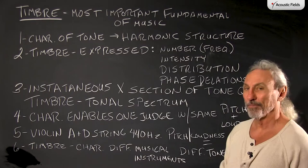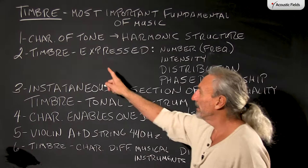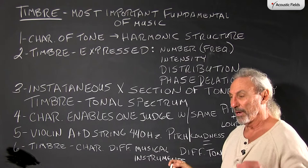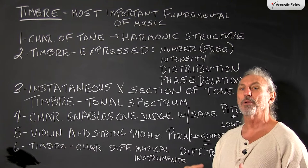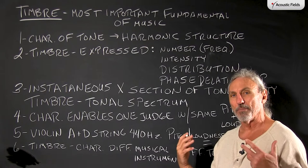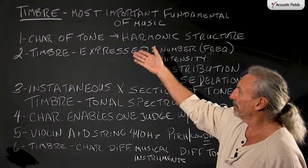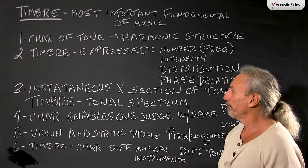So today we're going to talk about timbre. Timbre is one of the most important fundamental characteristics of music. It's a characteristic of tone that has a harmonic structure. If you ever go into some rooms, you know those rooms to be really good for mid-range, really good for voice — you can really grab a hold of the voice emotionally and relate to it immediately. Well, that's because the harmonic structure, the characteristic of the tone, the timbre, has all been recognized by the person who designed the room.